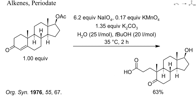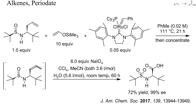Here, the enone substructure of testosterone acetate was cleaved with an excess of periodate. The catalyst was potassium permanganate and the oxidation was complete after 2 hours at 35 degrees Celsius.